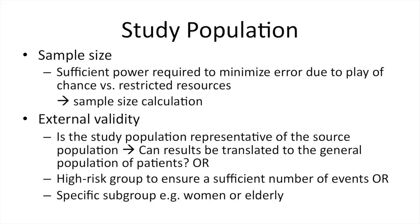Next, you have to think about your study population. You need to think about your sample size — how many patients you need. Many patients minimize error due to the play of chance, but you also have to be aware of restricted resources. It's very important to do a sample size calculation at the beginning, so you don't end up after one or two years finding you don't have enough patients. Think about external validity — what is the source population, can results be translated to the general population, or do you specifically want to address a high-risk group or a specific subgroup like women or elderly people?